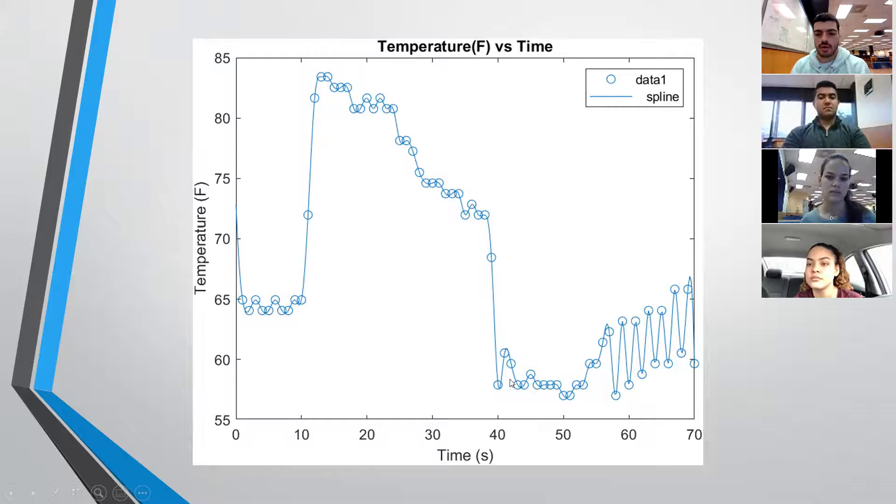Then it goes up when Paul touches it with his warm hands, and then it goes down when I touch it with my cold hands. So you can see the three temperatures. It goes all the way until 83, 84 degrees, and then with my hands, it goes almost to 63, 62.